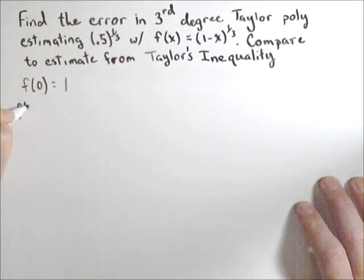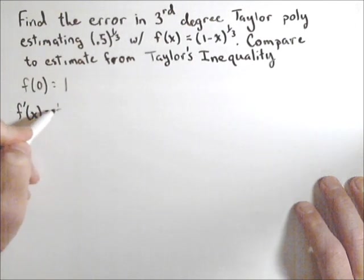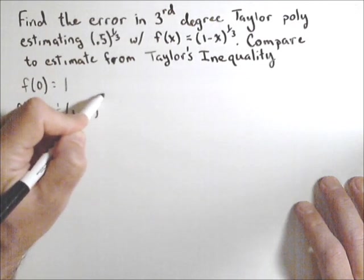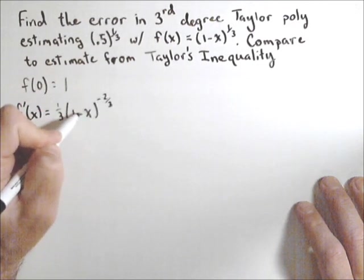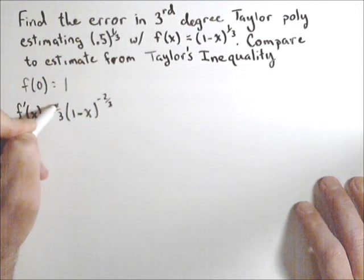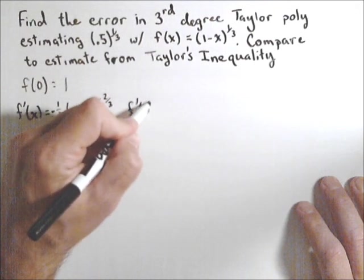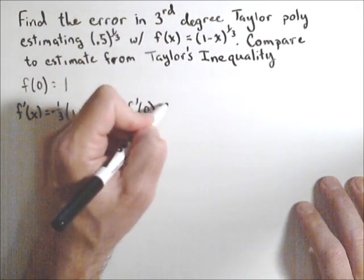Now we need some derivatives. f'(x) is 1/3 times (1-x)^(-2/3) times a negative 1 because of the chain rule, so we'll make that negative. Therefore, f'(0) is -1/3.